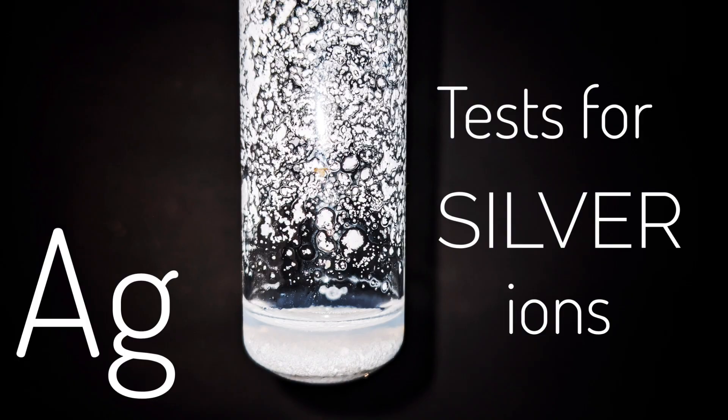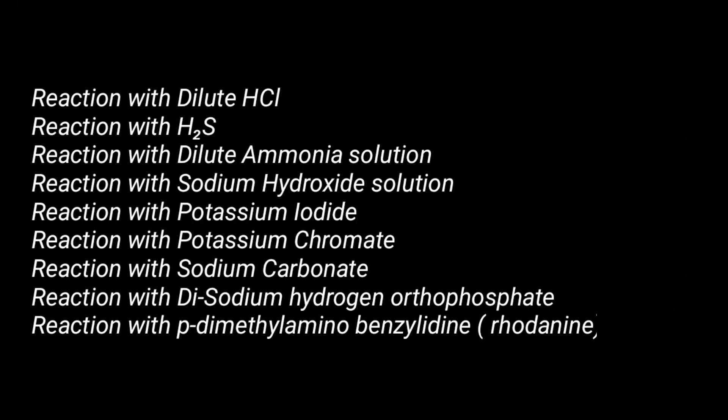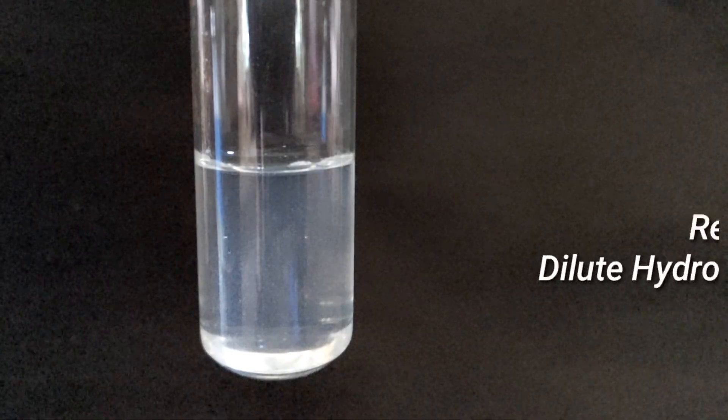Hello friends. In this video we will be doing the various tests for the identification of silver ions. These are the tests which we are planning to do in this session. You can pause the video and see all the tests or write them down if you want to. For all these reactions we will be using a 0.1 normal solution of silver nitrate.